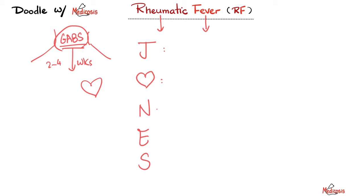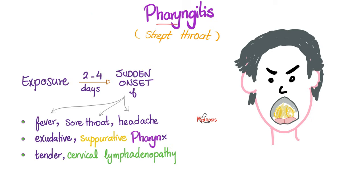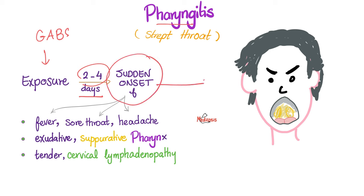Then we have N, which is subcutaneous nodules. The E is erythema marginatum. Why marginatum? Because we have a margin. Centrally, we have clearing. Peripherally, we have a rim of pink rash — this is erythema marginatum. And the S is today's topic, which is Sydenham's Chorea. I started with pharyngitis — I got exposed to the group A beta-hemolytic streptococcus. Then give me two to four days and I develop the pharyngitis. Wait two to four weeks after this, and I develop the rheumatic fever.